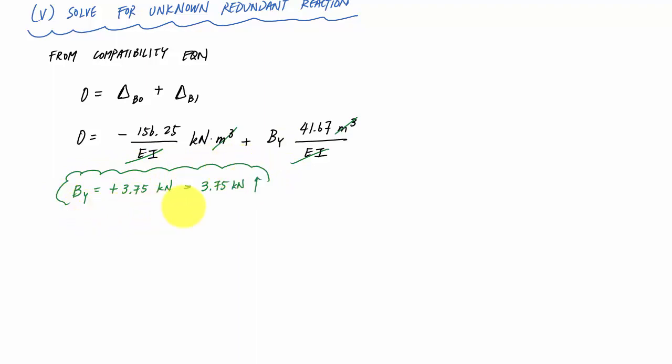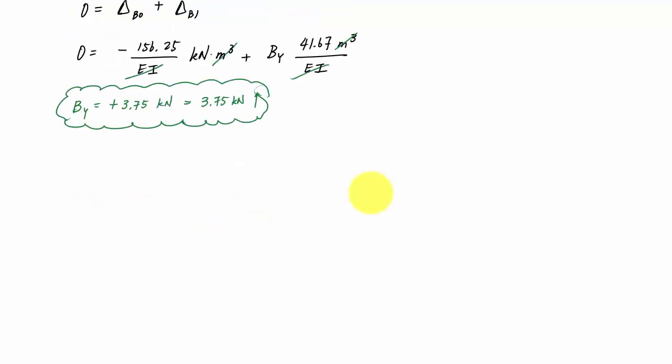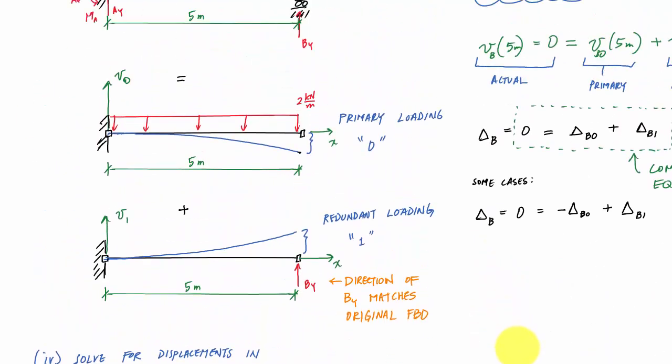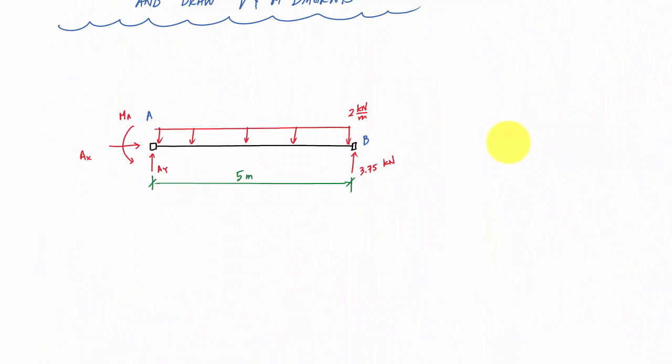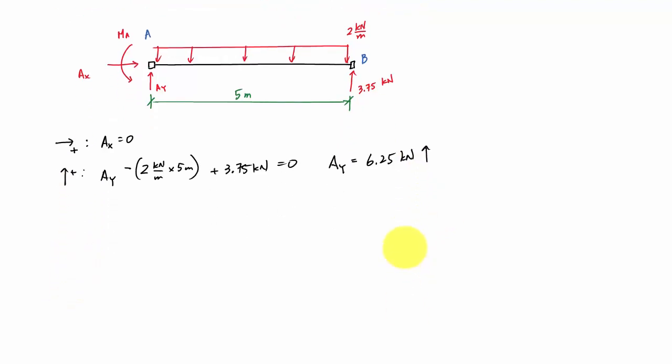And so now that we have this, our number of unknowns is now reduced to 3. We can solve for the remaining unknown reactions just using equilibrium equations and then draw the shear moment diagrams. So I'll bring down the original drawing here. And using equilibrium equations, I can go ahead and solve for the remaining support reactions for AX, AY, and the moment at A. And so from sum of the forces in the horizontal, I would get AX is 0. Sum of the forces in the vertical, I would get AY minus 2 kilonewtons per meter times 5 meters plus 3.75 kilonewtons. And this would tell me that AY is 6.25 kilonewtons. It's going to be a positive result indicating upwards.